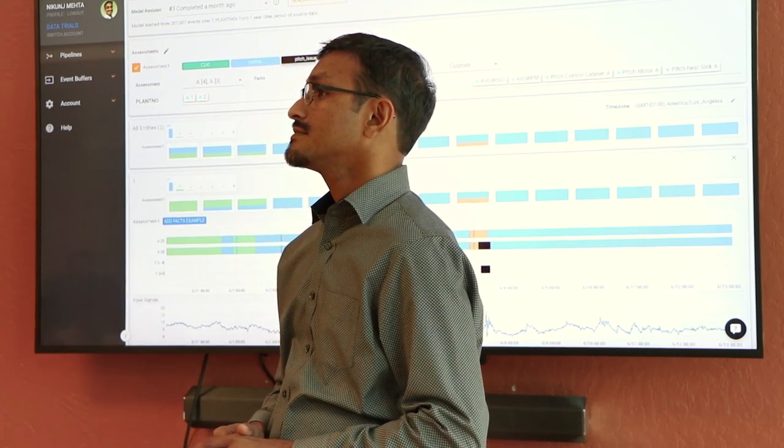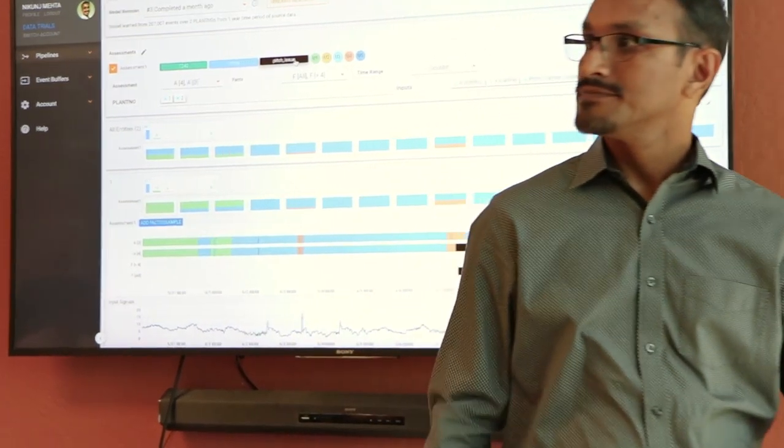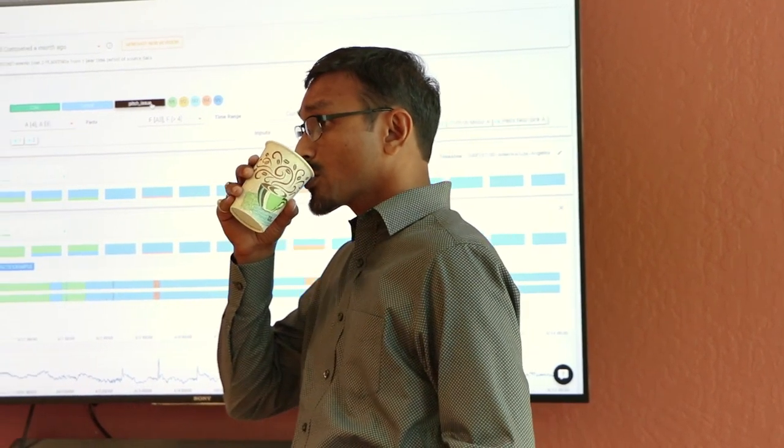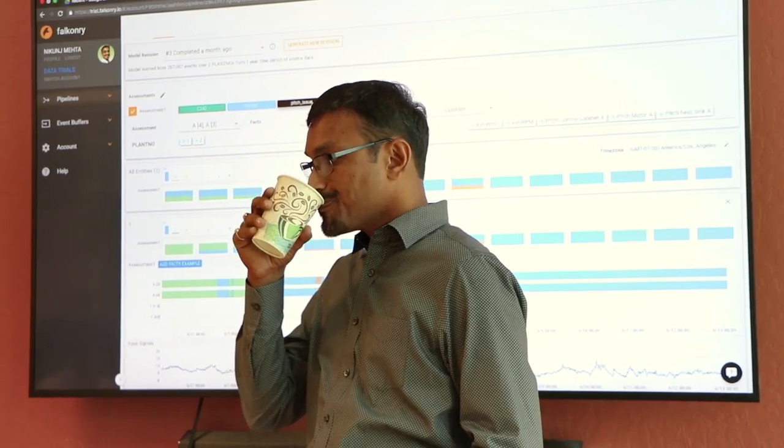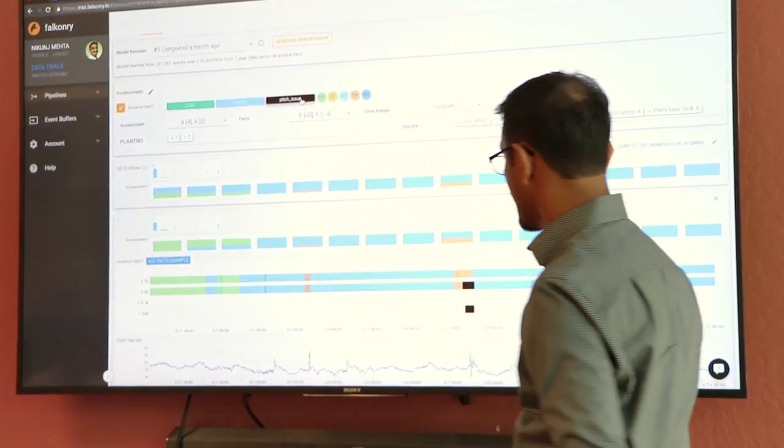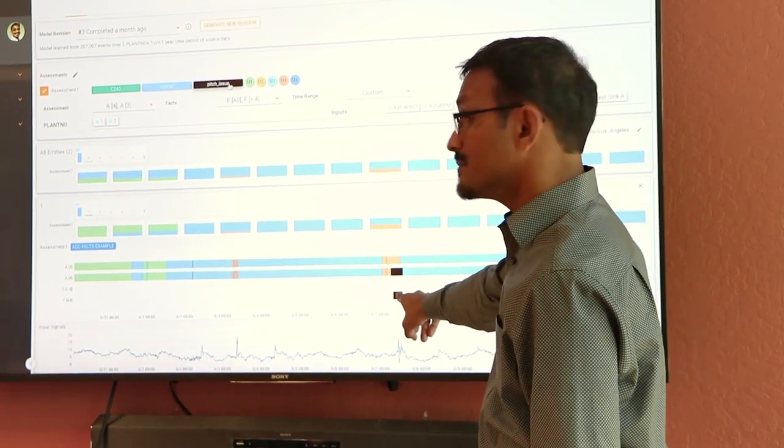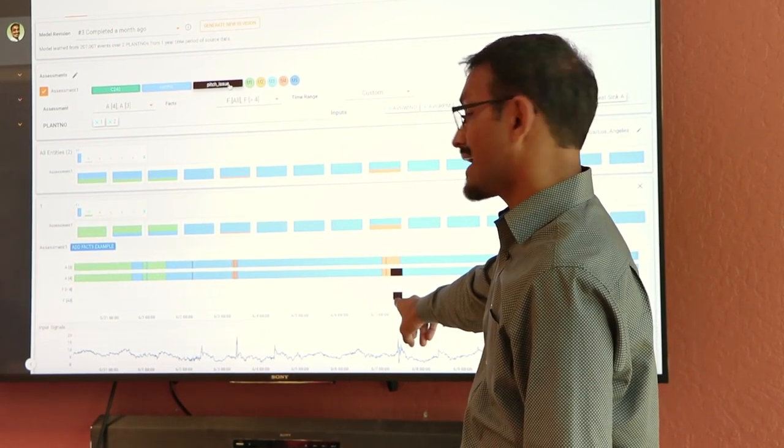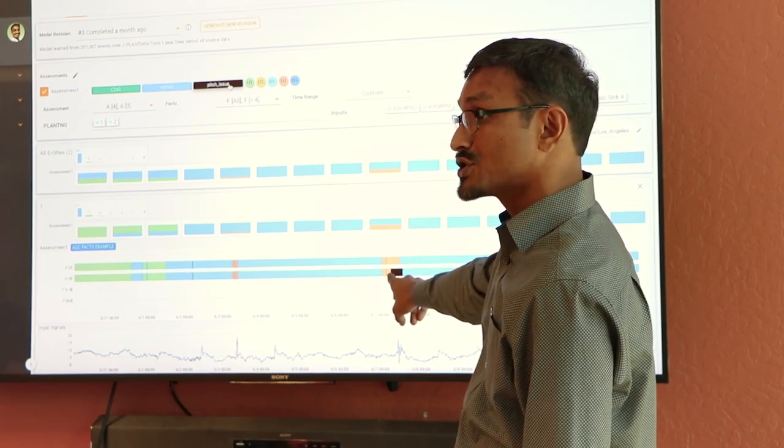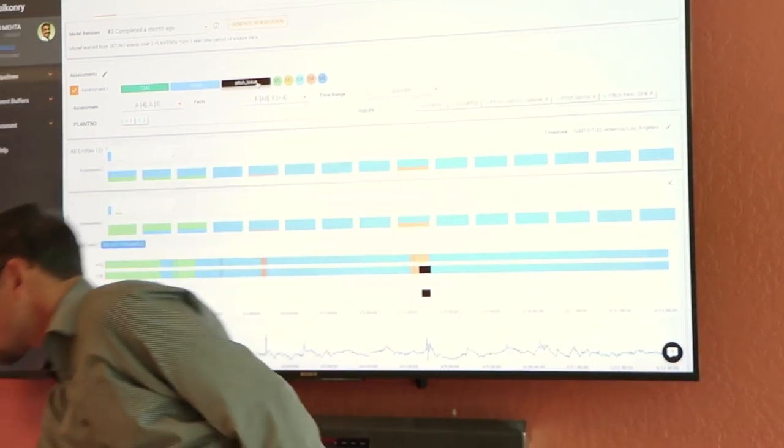So do you also do a prediction or predict a trend? For example, like for a fleet, like when we should schedule or check out? Good question. Actually, this is the perfect time to answer that question. So you notice here, pitch issue was marked down here. Right? And Falconry is saying that there is a condition that happened just before the pitch issue. Which, by the way, if I put this bar here, it will make it clearer.